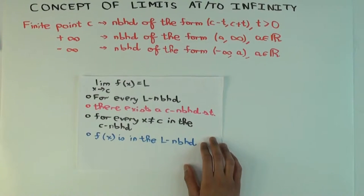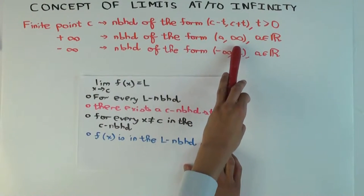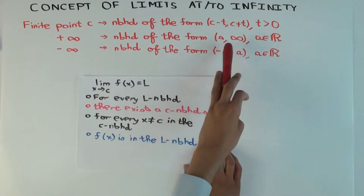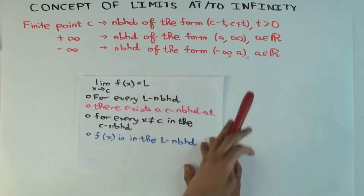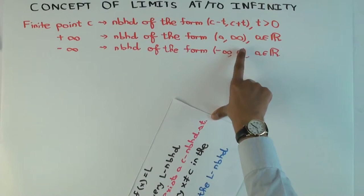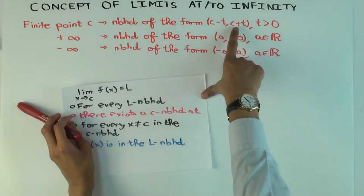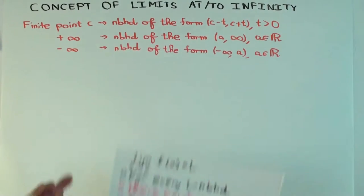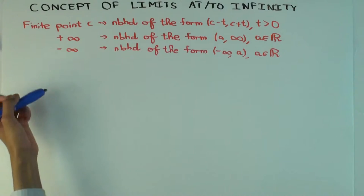We cannot take an interval centered at infinity because infinity is already at one extreme, so the neighborhoods we take are open intervals from a finite point to infinity. For negative infinity, we use neighborhoods of the form negative infinity to a finite point. The parameter a here can be changed to decide what the neighborhood is, just like t is a parameter used to decide what the neighborhood is. With this general understanding, let's work out some definitions.